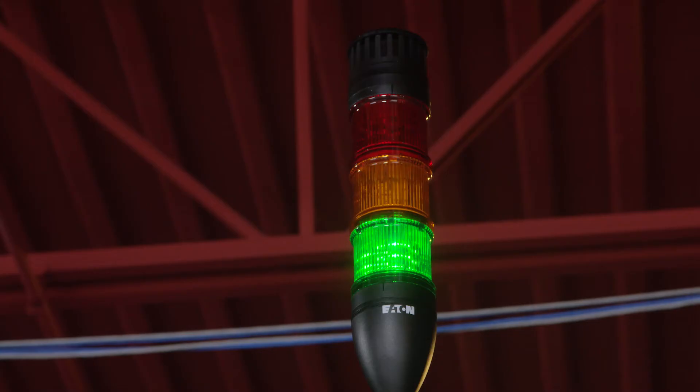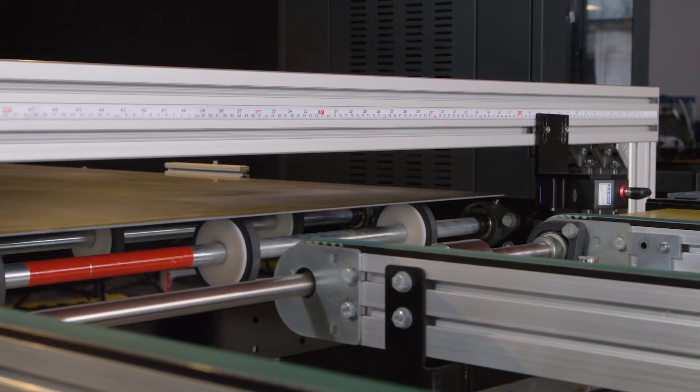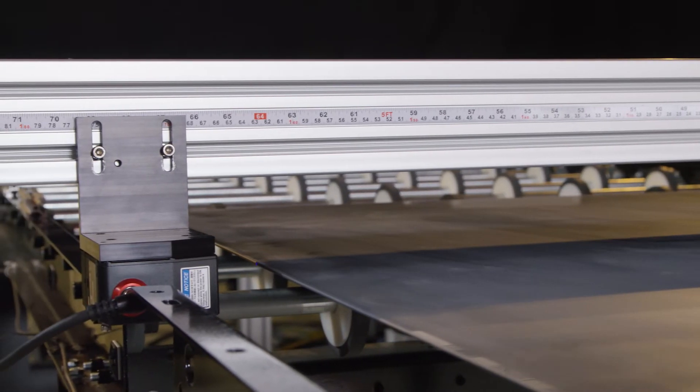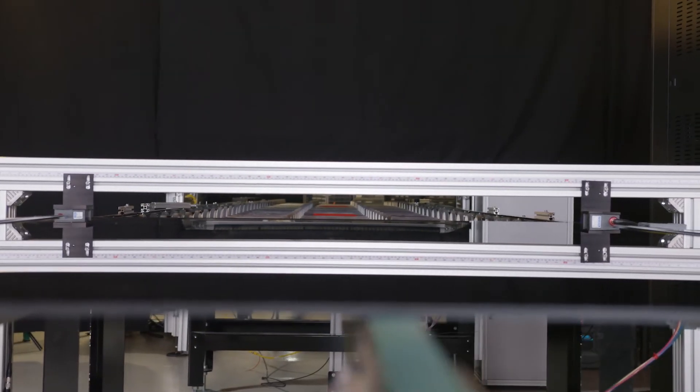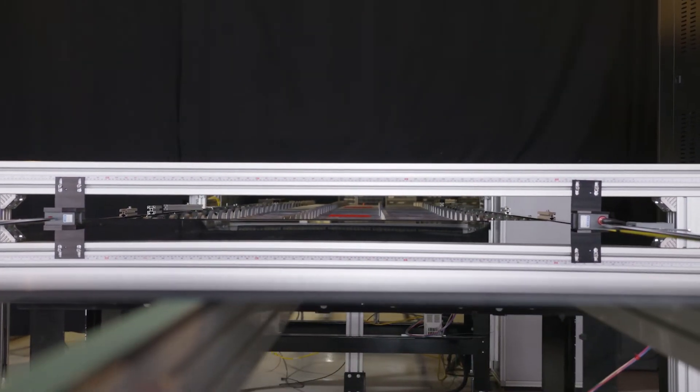In this setup, we mounted sensors to each side of the conveyor. Once a glass panel moves in front of the sensors, it triggers a series of measurements to scan the edge as it moves through the manufacturing line.